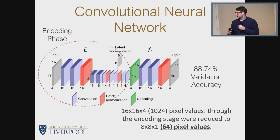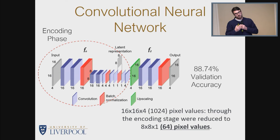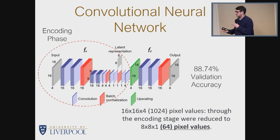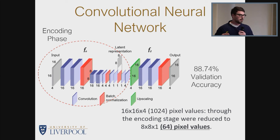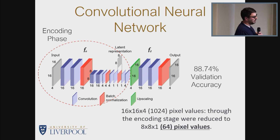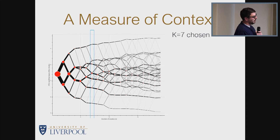We actually looked at the decoding phase only in terms of validation accuracy, as an assumption that the encoding might be effective, but then discarded it. You can think about this a bit like building a tabular classification where you might use something like principal components analysis to synthesize a larger series of variables down into a smaller subset.